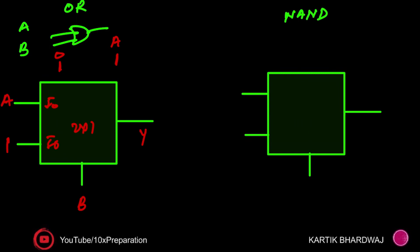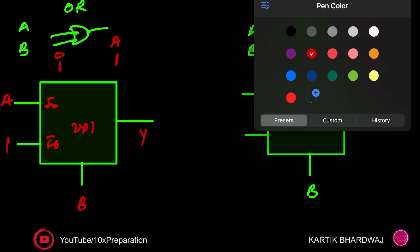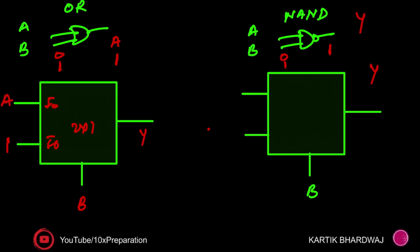Now for the NAND gate: again inputs a and b, put b as the select line on the 2x1 MUX, y is the output. When b is zero, a AND zero gives zero, then complement that — you get one. When b is one, a AND one gives a, then complement that — you get a-bar. So I0 is one and I1 is a-bar, giving you the NAND gate.